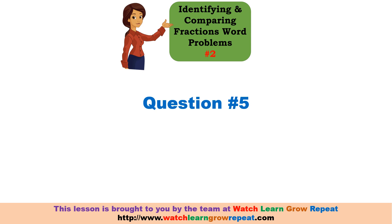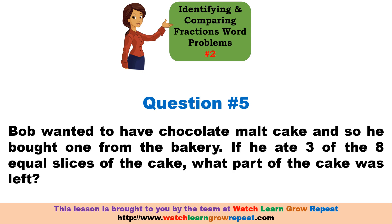Question number five: Bob wanted to have a chocolate malt cake so he bought one from the bakery. Now if he ate three of the eight slices of the cake, what part of the cake was still left?